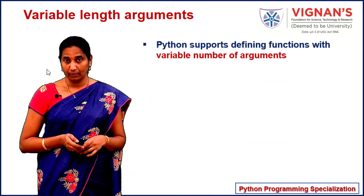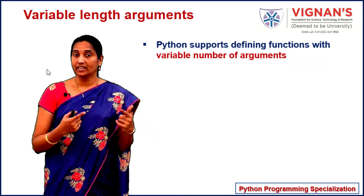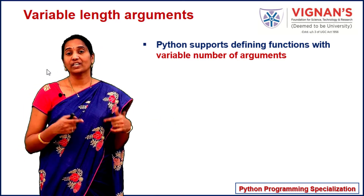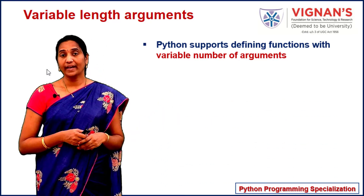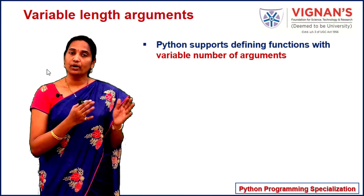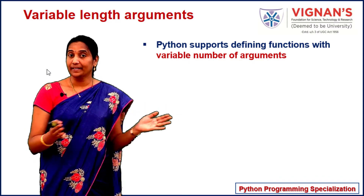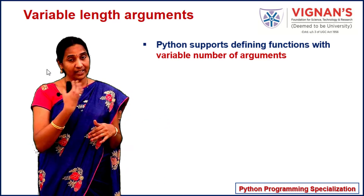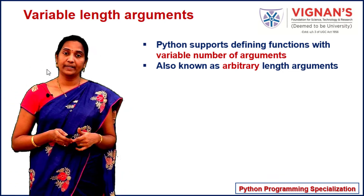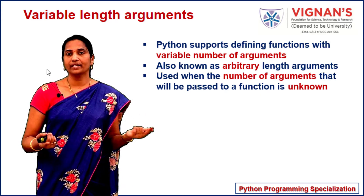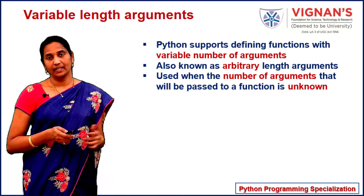Python supports defining functions with a variable number of arguments. The number of arguments you are sending need not be fixed — it can vary, which is much more comfortable for the developer. These are also known as arbitrary length arguments, as the number can be arbitrary. When you are not very sure about the number of arguments you are sending to a function, you can use variable number of arguments or arbitrary length arguments.